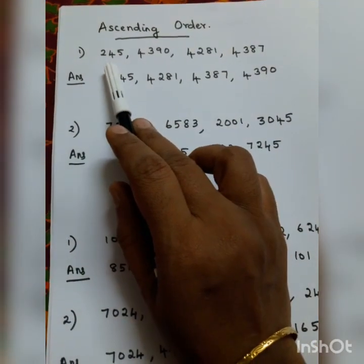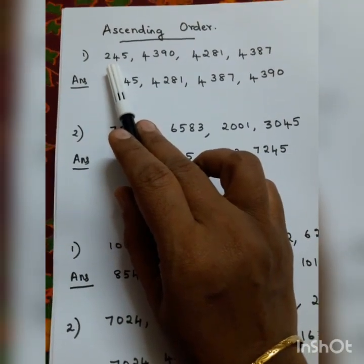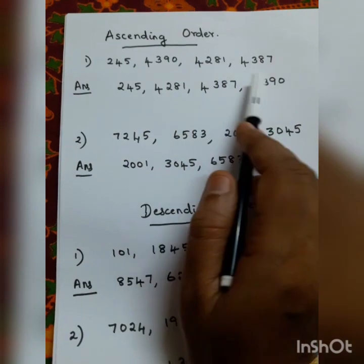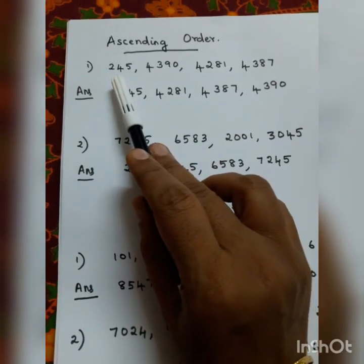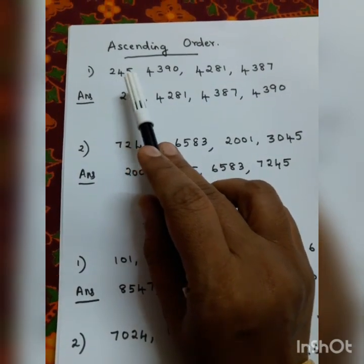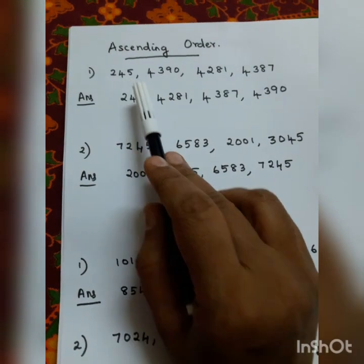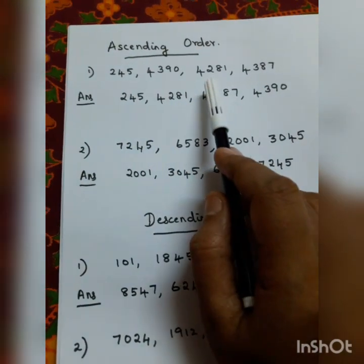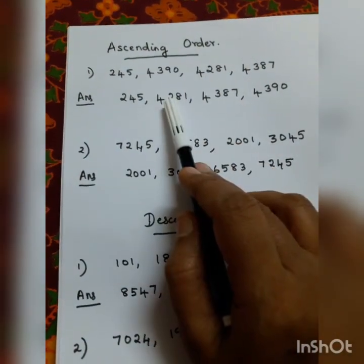I am going to arrange the numbers in ascending order. If we arrange the numbers by the first digit, we get 245 and 4,281 coming first.